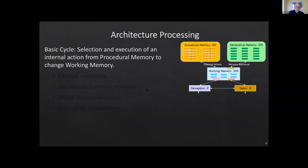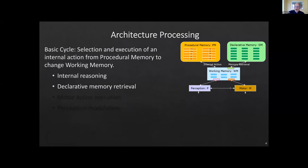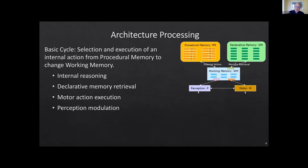There's a basic cycle in both systems that goes from execution of knowledge in procedural memory — usually rule-like structures — which performs an internal action on working memory. That action can be internal reasoning, initiating a declarative memory retrieval, initiating a motor action, or modulating perception. Procedural memory drives the basic cycle. In ACT-R when modeling human behavior, and similarly in SOAR, this occurs at 50 milliseconds. Retrievals from declarative memory can be asynchronous, taking longer than 50ms, with more procedural activity happening alongside asynchronous perception and motor activity.